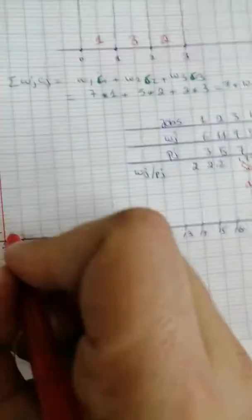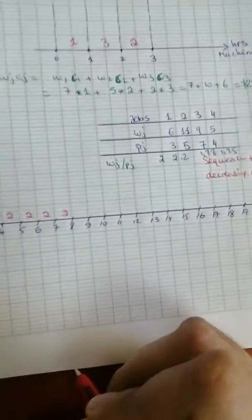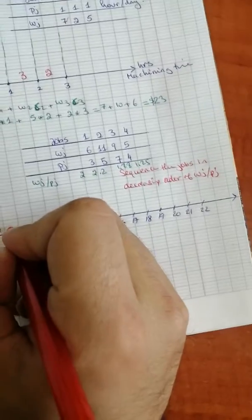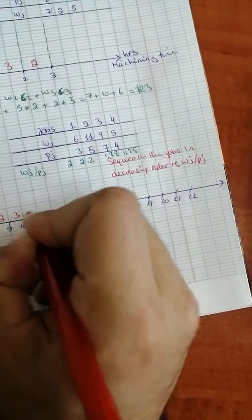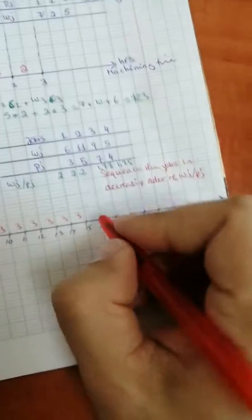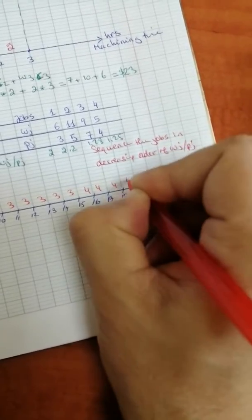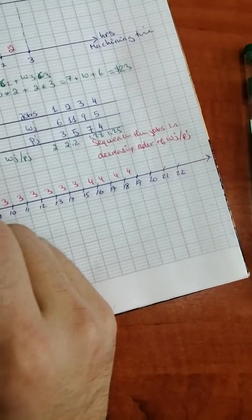Job 1 has 3 processing hours, job 2 has 5 processing hours, job 3 has 7 processing hours, and job 4 has 4 processing hours. If we need to calculate summation of wj*cj...